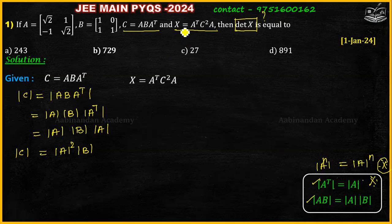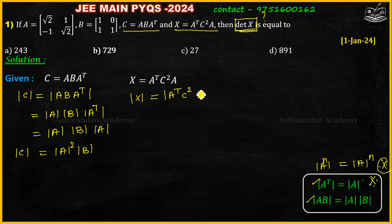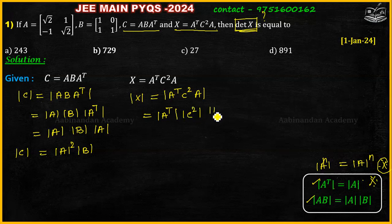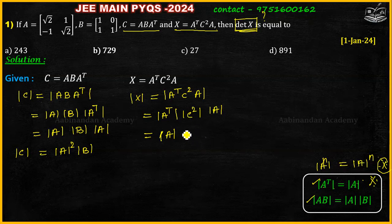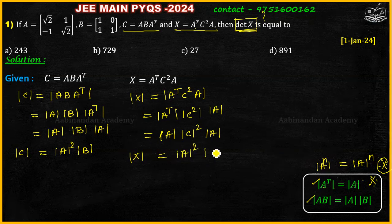X is equal to A transpose C squared A. Taking the determinant of X: determinant of A transpose C squared A. Using the second property: determinant of A transpose into determinant of C squared into determinant of A. Using the first property, determinant of A transpose equals determinant of A. Using the third property, determinant of C squared equals determinant of C whole squared. So determinant of X equals determinant of A squared into determinant of C squared.